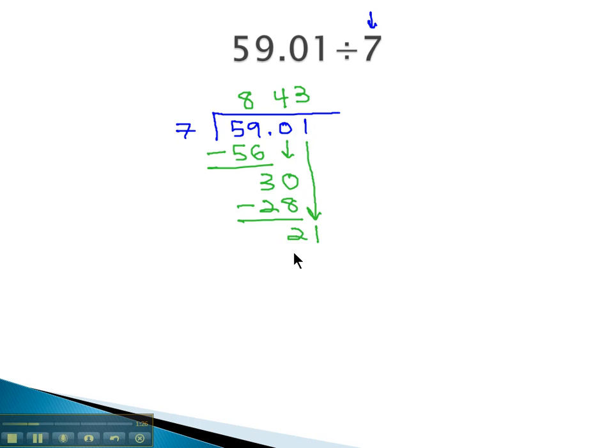And 7 times 3 is 21. Subtract, and I get 0, so now we're done dividing. Placing the decimal then, we just move this decimal straight up into our answer. We end up with 8 and 43 hundredths.